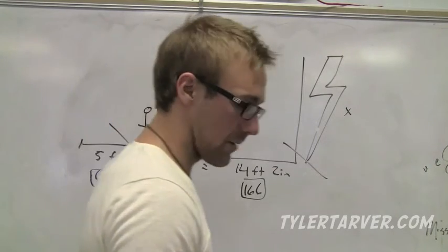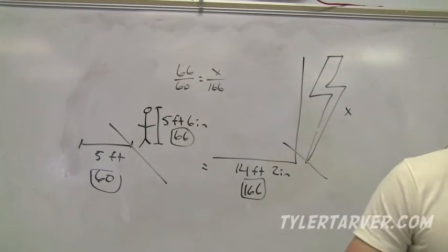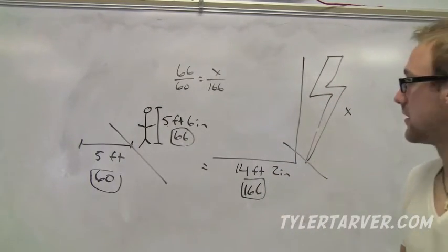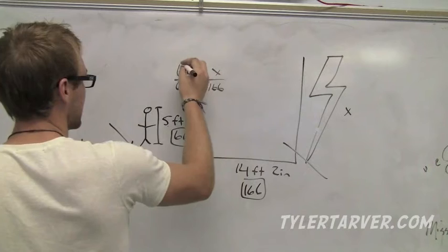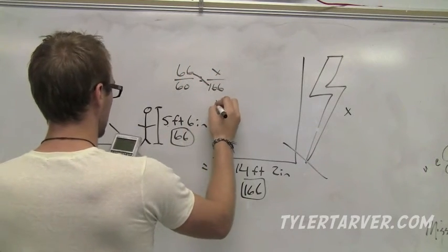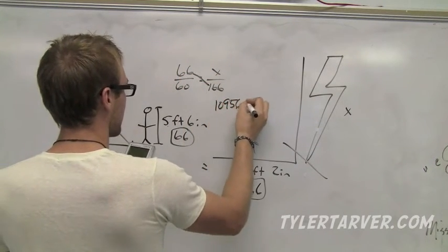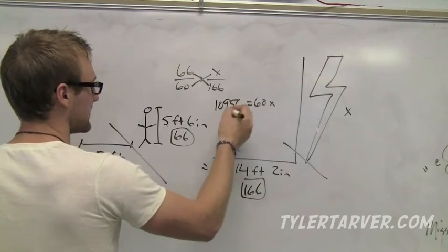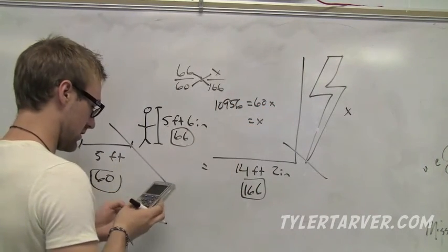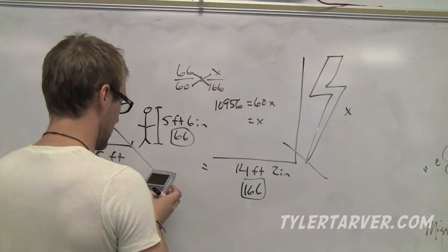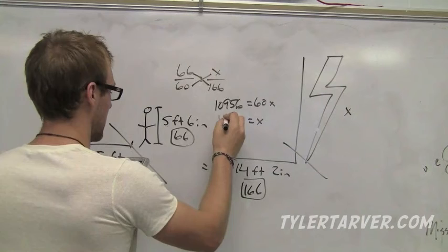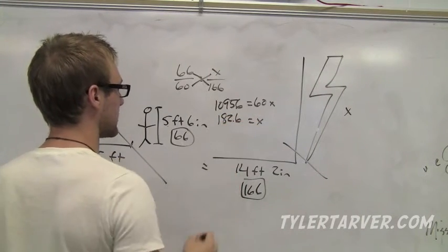So this part I'm not going to be able to do in my head. If you can, super duper great for you. So 66 times 166. I'm cross multiplying. 66 times 166 is 10,956. And then 60 times x is 60x. So I'm going to divide 60 to get x by itself. And I typed in an extra plus sign, which nobody likes. 182.6.